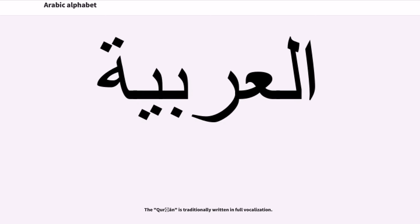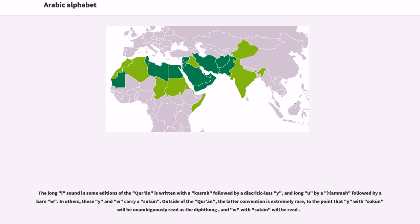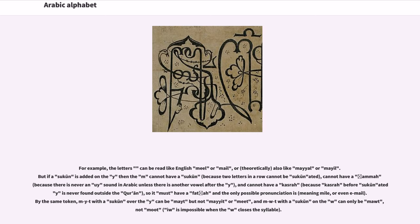The Quran is traditionally written in full vocalization. The long 'i' sound in some editions of the Quran is written with a kasra followed by a diacriticless ya, and long 'u' by a dhamma followed by a bare waw. In other editions, these ya and waw carry a sukun. Outside of the Quran, the latter convention is extremely rare, to the point that ya with sukun will be unambiguously read as the diphthong, and waw with sukun will be read similarly. For example, the letters can be read like English 'mail' or 'male', or theoretically also like 'mo' or 'male'.